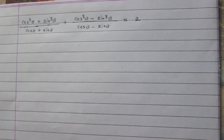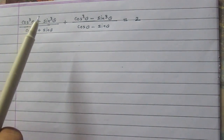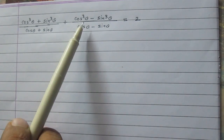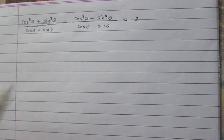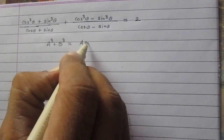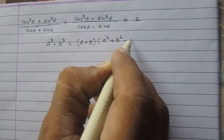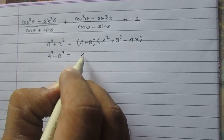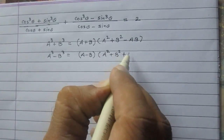In this identity the left hand side has two parts. In the first part we have cos cubed theta plus sine cubed theta, whole divided by cos theta plus sine theta. The second part is cos cubed theta minus sine cubed theta, whole divided by cos theta minus sine theta. We know that a cubed plus b cubed equals a plus b, multiplied by a squared plus b squared minus ab. Similarly, a cubed minus b cubed equals a minus b, multiplied by a squared plus b squared plus ab.